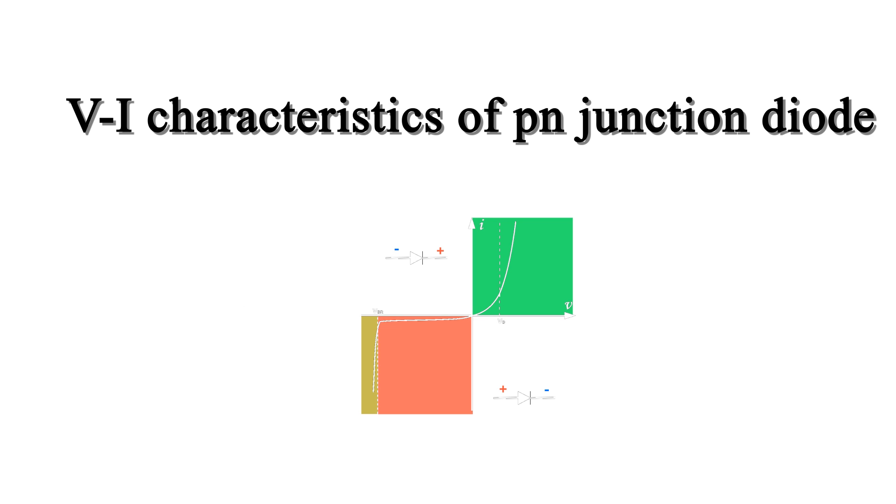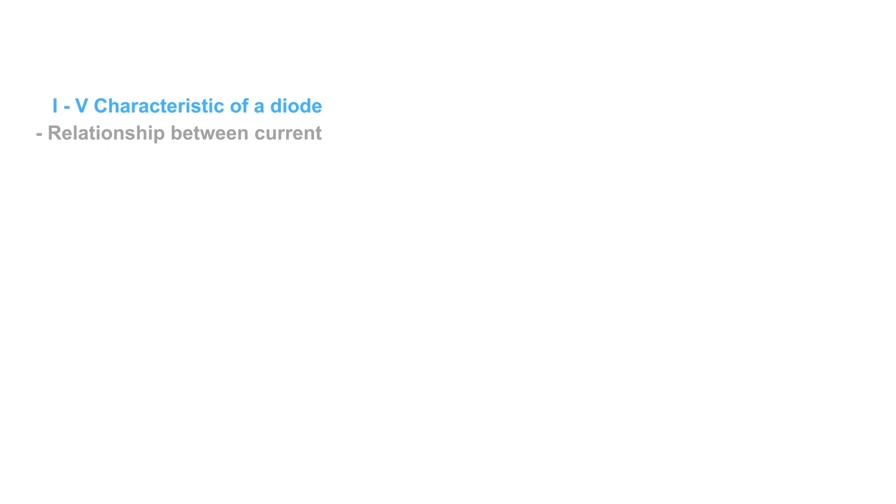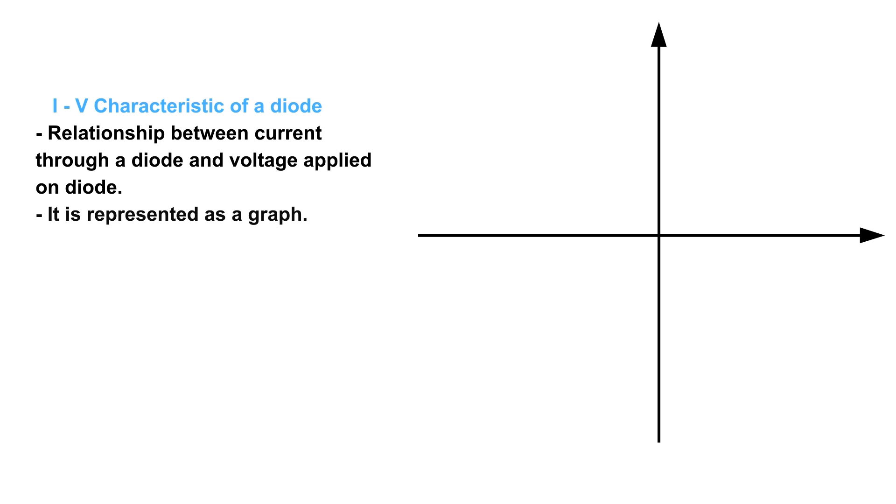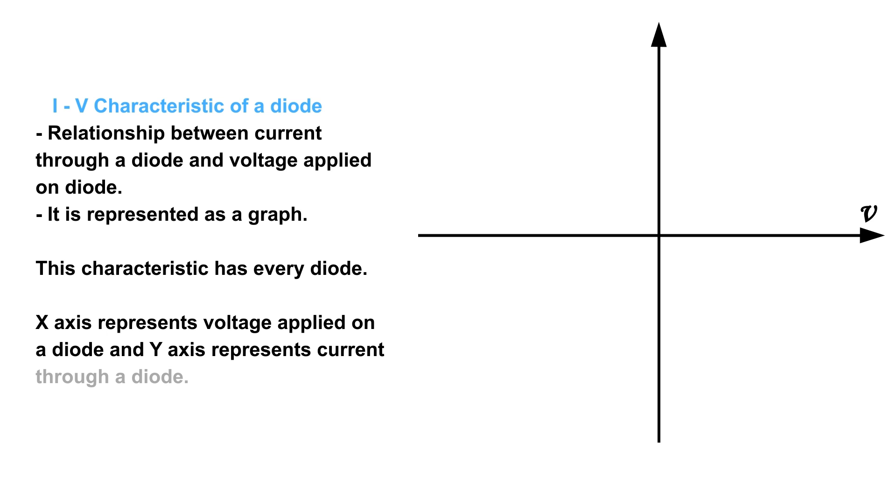I-V characteristic of a diode is the relationship between current through a diode and voltage applied on the diode. It is represented as a graph. This characteristic exists for every diode. The x-axis represents voltage applied on a diode and y-axis represents current through a diode.